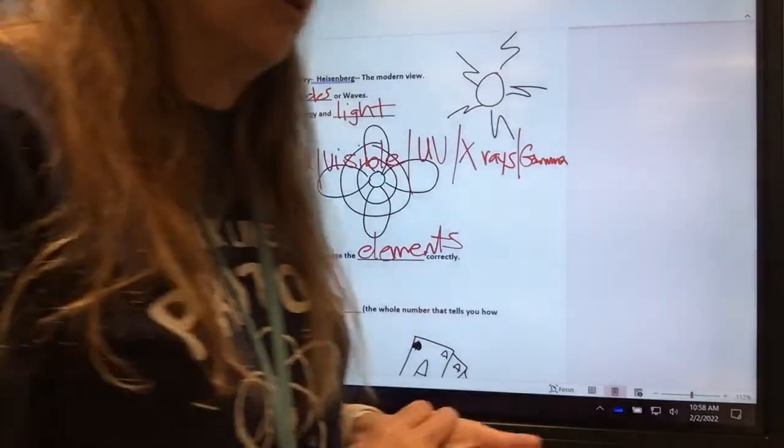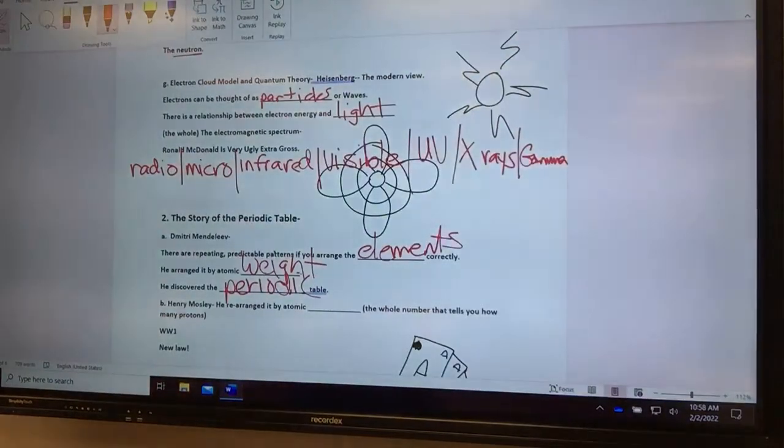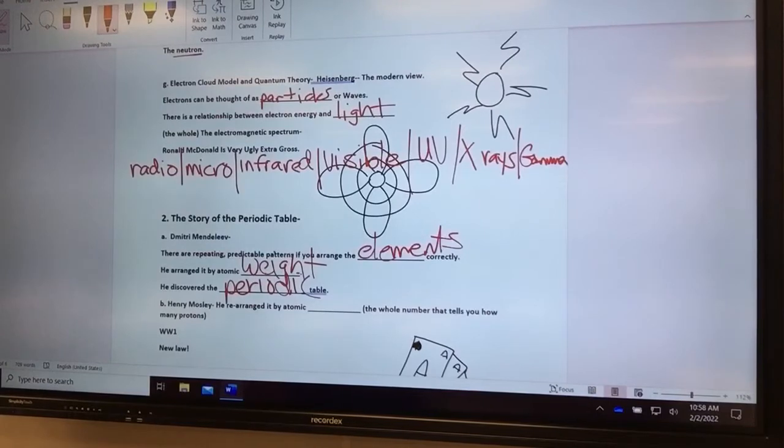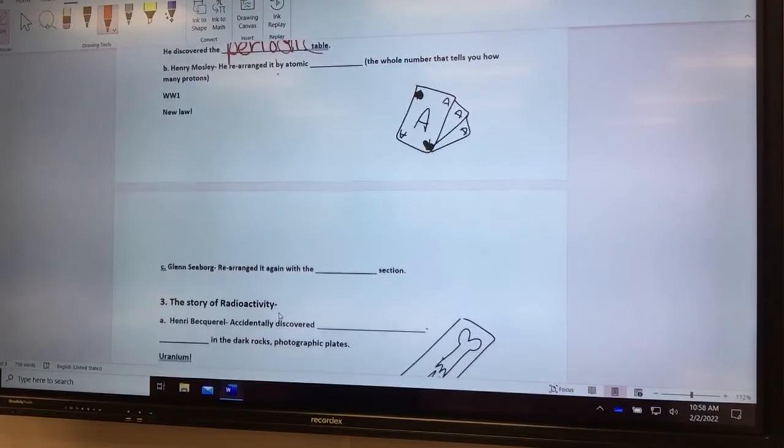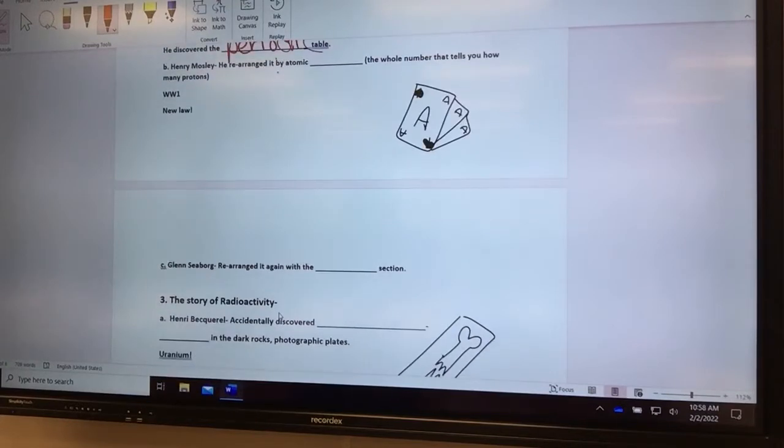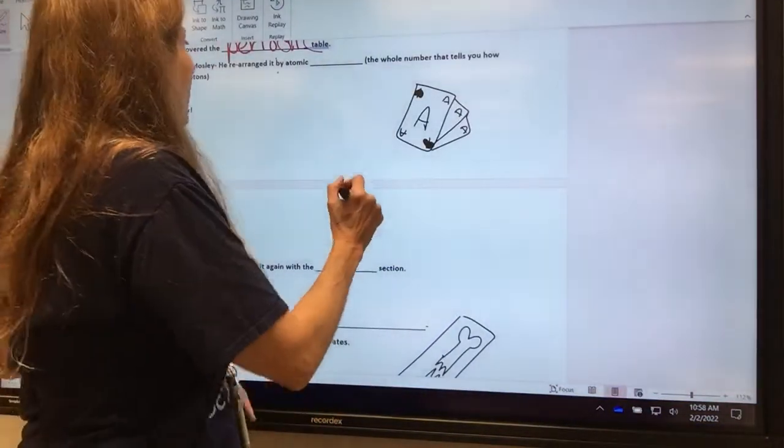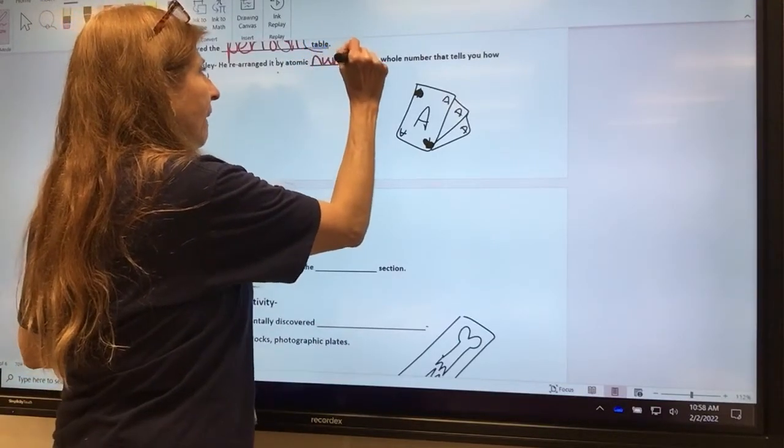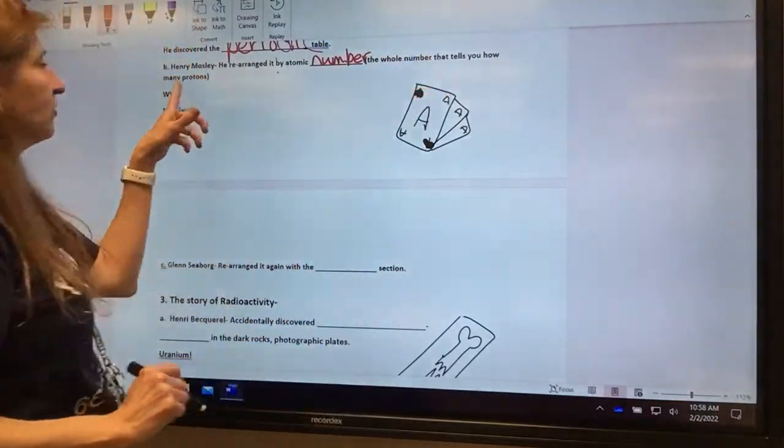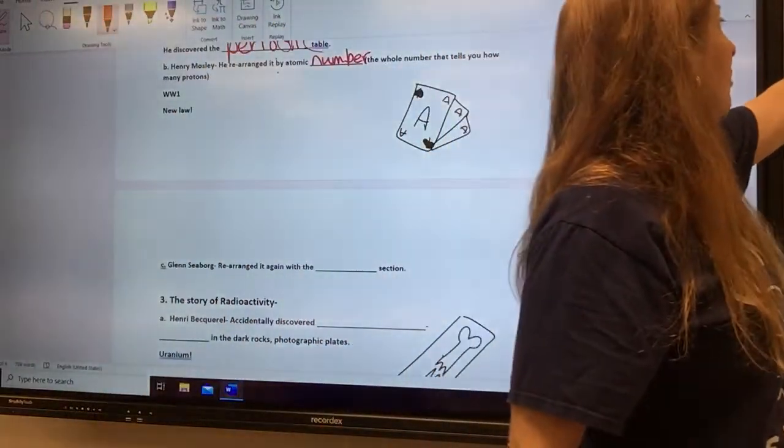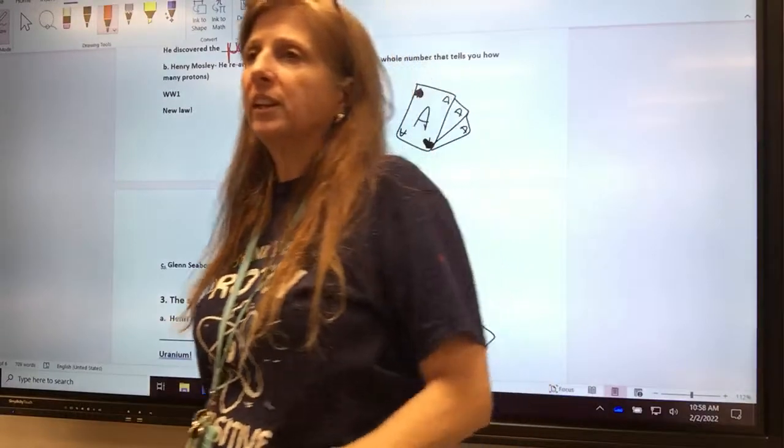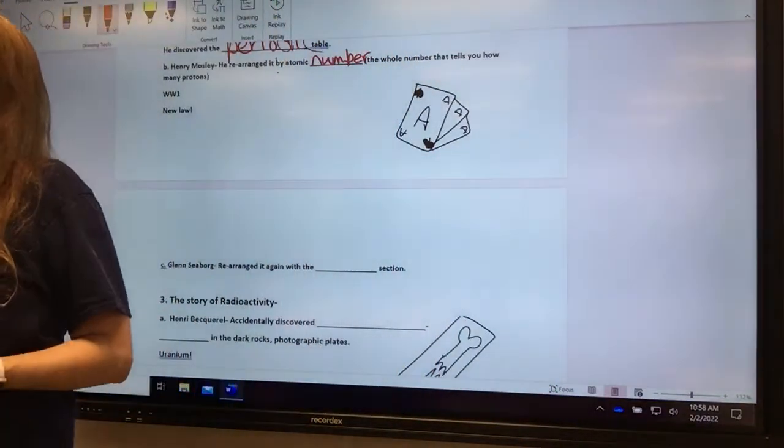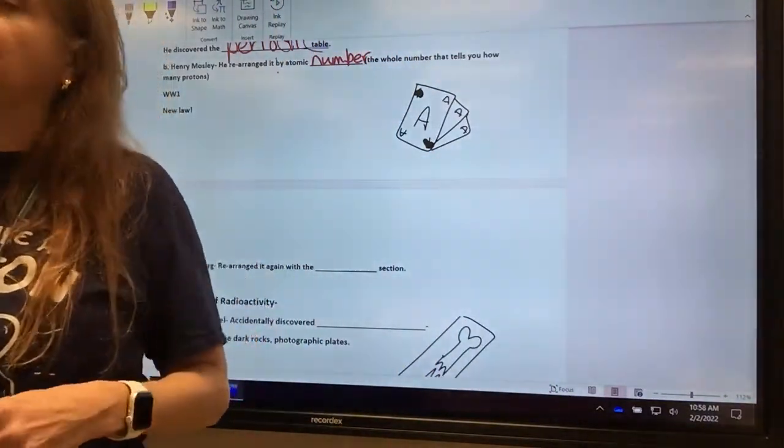But it wasn't quite right. Remember, he did it by weight. Then came along a guy named Henry Moseley. He figured out, by this time, they had discovered the proton, so he rearranged it by atomic number. It's the whole number that tells you how many protons. So it's like these numbers right here, 11, 12. Those are the atomic numbers.